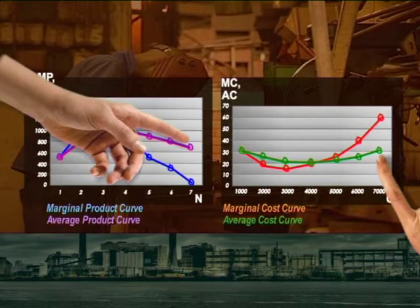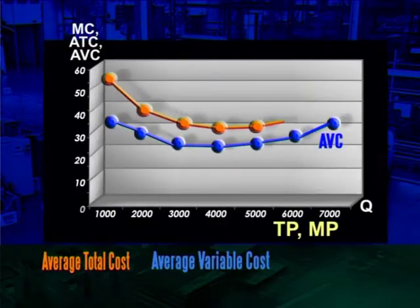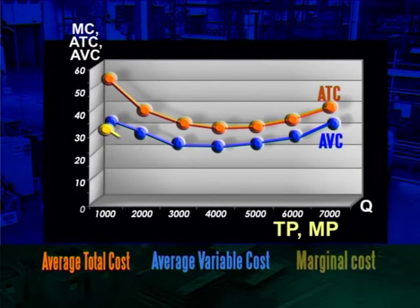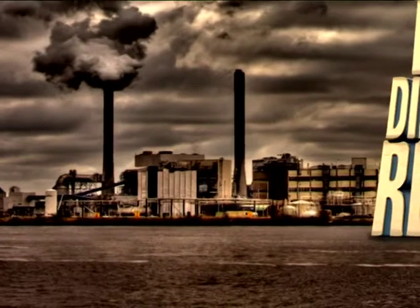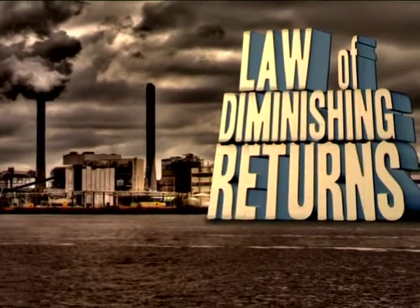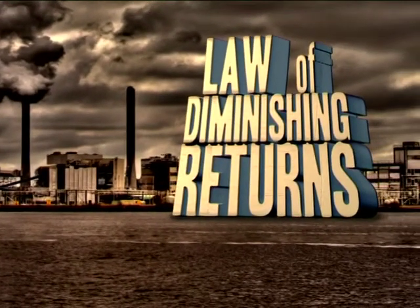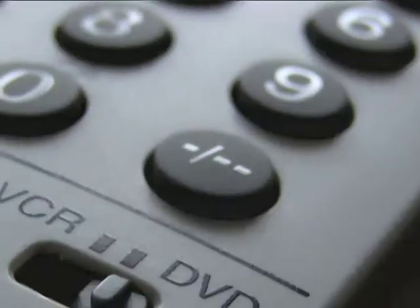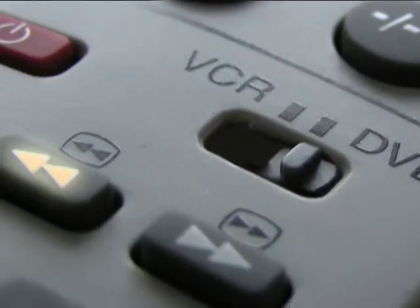The same relationship can be seen between the average product and the average variable cost curves. We've now looked at different costs and the law of diminishing returns. Remember these because they're useful tools for the rest of your economic studies. And don't forget, you have a rewind button if anything's unclear.